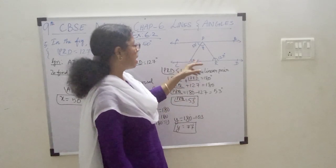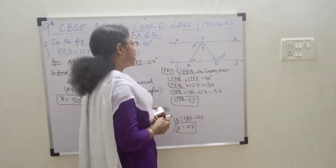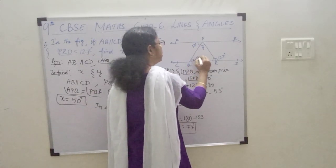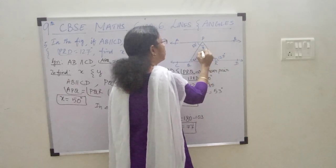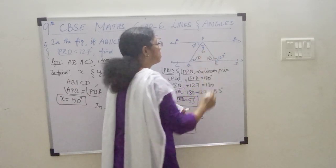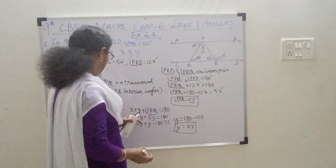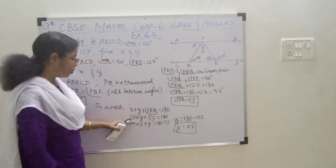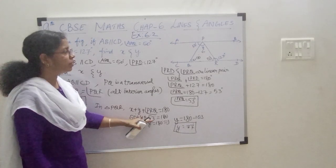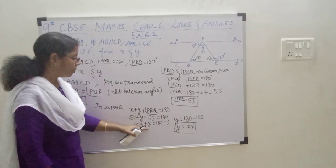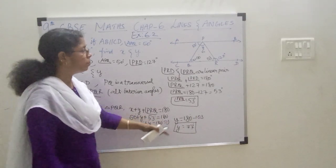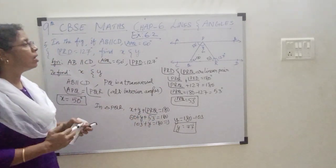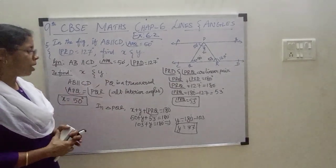So, we found this angle and this angle — X as 50 and angle PRQ as 53 — and we have to find out Y. In triangle PQR, the sum of the three angles is 180. So, 50 degrees plus Y plus 53 equals 180, which gives Y equal to 180 minus 103, which gives you 77 degrees. Hence, the third angle of triangle PQR is 77 degrees.